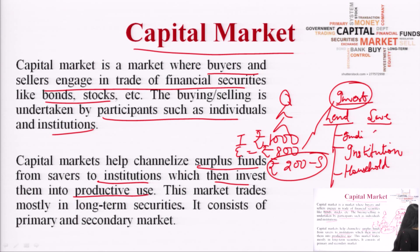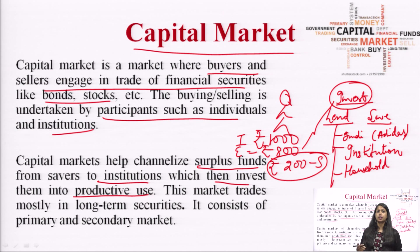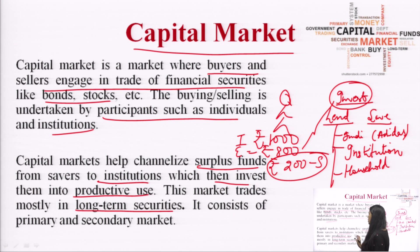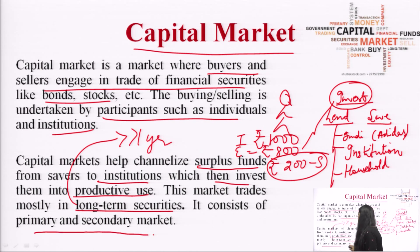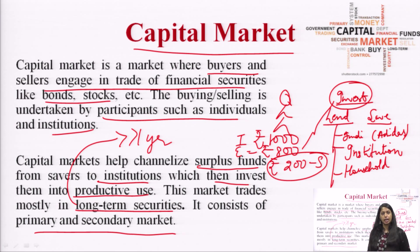For example, if Adidas needs money, it will borrow from a pool of people and then manufacture more products — shoes, bags, sportswear. This market mostly trades in long-term securities, meaning anything more than one year. It consists of primary and secondary markets: fresh issues go to the primary market, while resales and repurchases are handled in the secondary market.